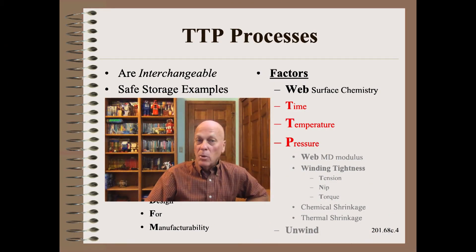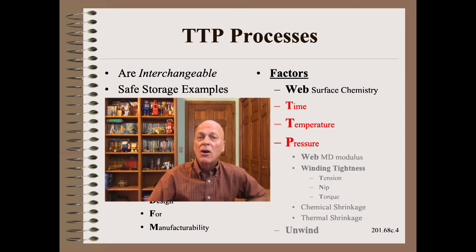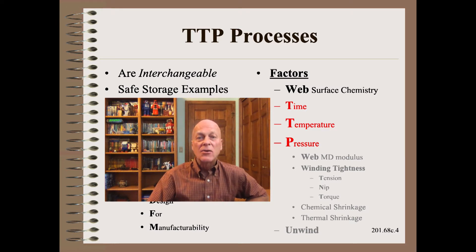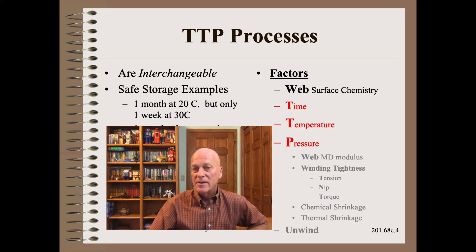Many processes, not just blocking, are TTP problems plus chemistry. TTP stands for time, temperature, and pressure, which are often interchangeable within narrow bounds. The following simplified examples illustrate the possible trade-offs to achieve less blocking. Example one: you may be able to store safely at room temperature for one month, but only a week at 30 degrees C.